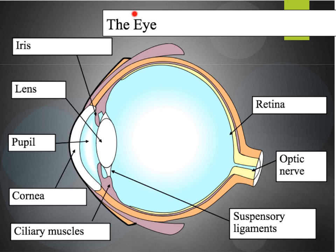The human eye is quite a complicated organ; however, there are some specific parts that we need to be able to name. Moving from the front of the eye backwards, at the front we have the cornea, which, along with the lens, focuses the light onto the back of the eye at the retina.